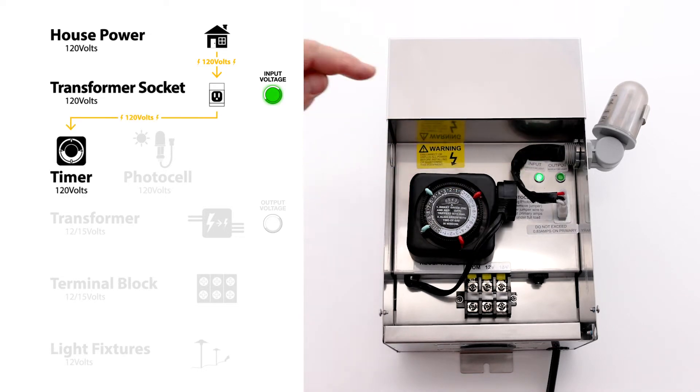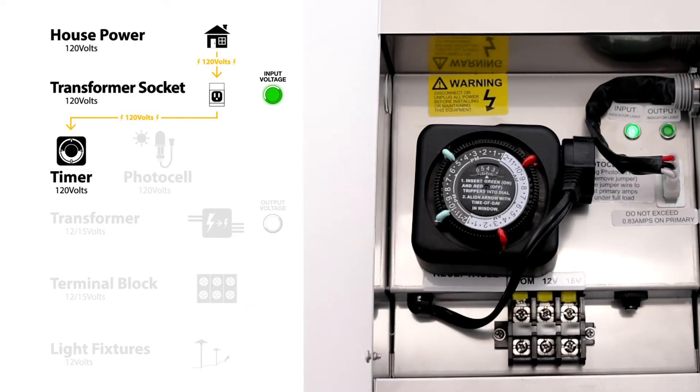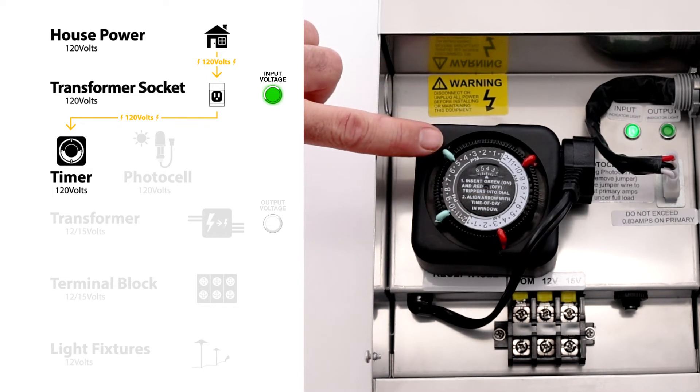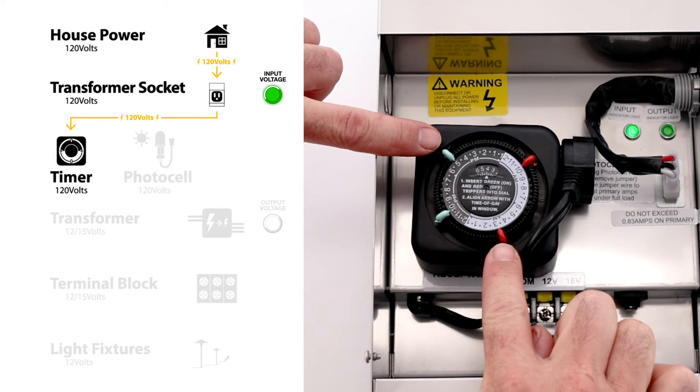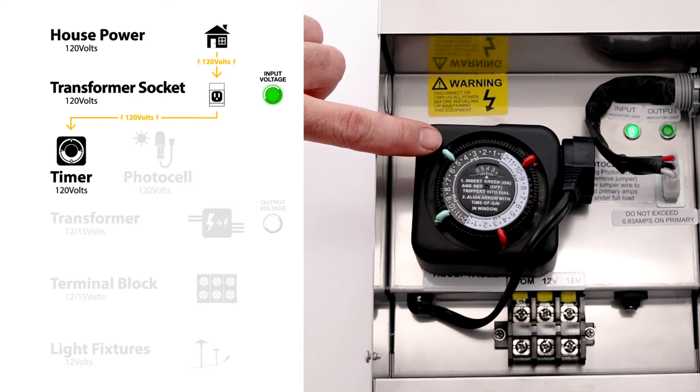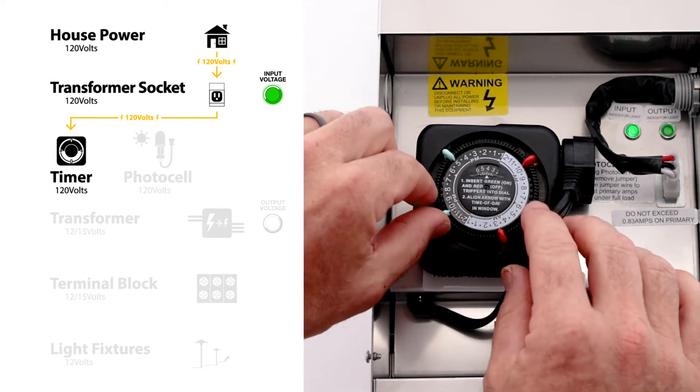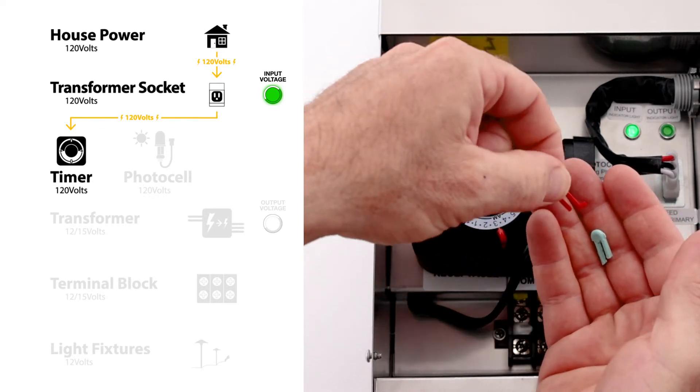The socket sends the power to the installed timer. The timer is set by you with an on time of say 5 o'clock and an off time of say 3 a.m. You will use only one pin on and one pin for off. The other two pins you can remove and save in case you lose one.